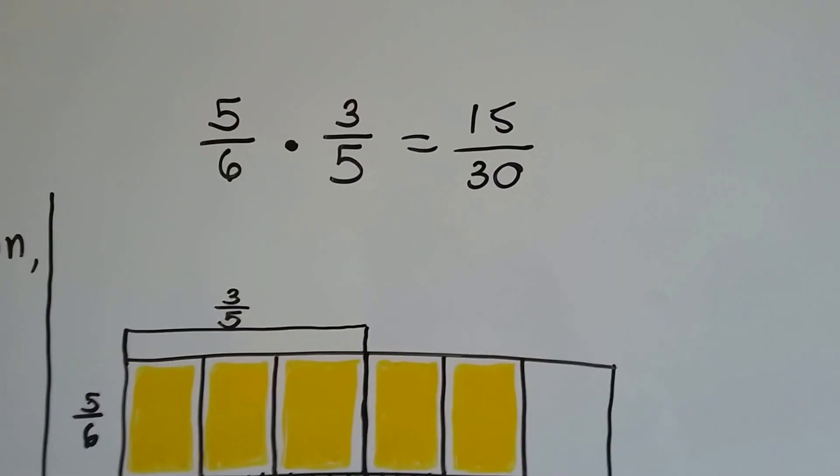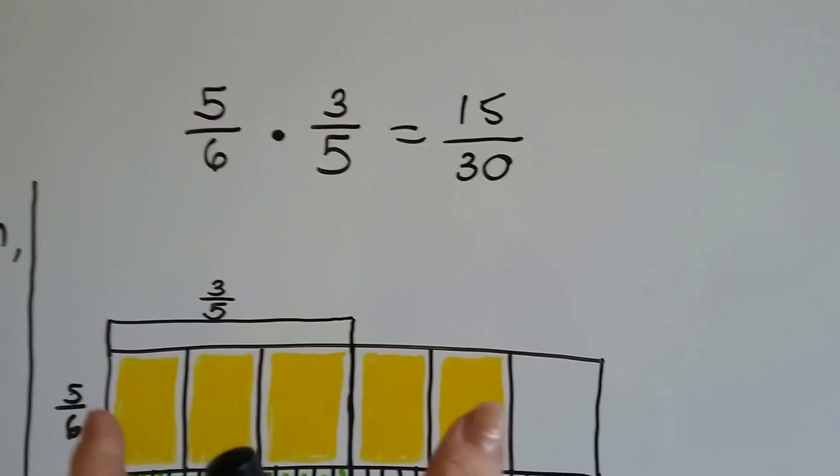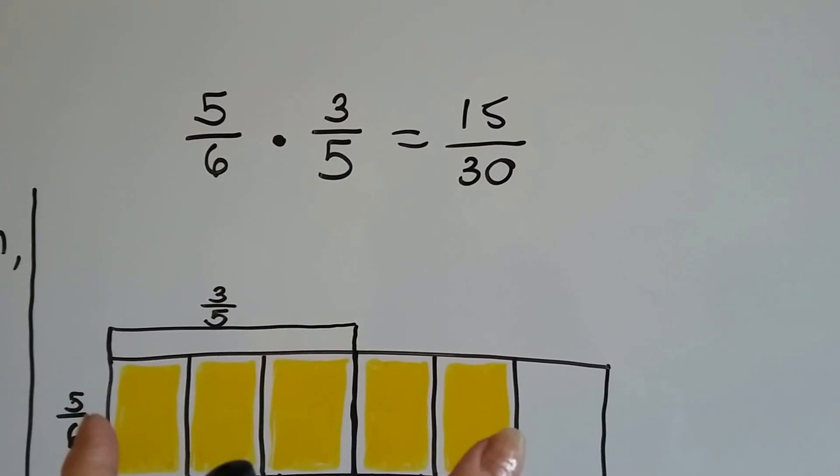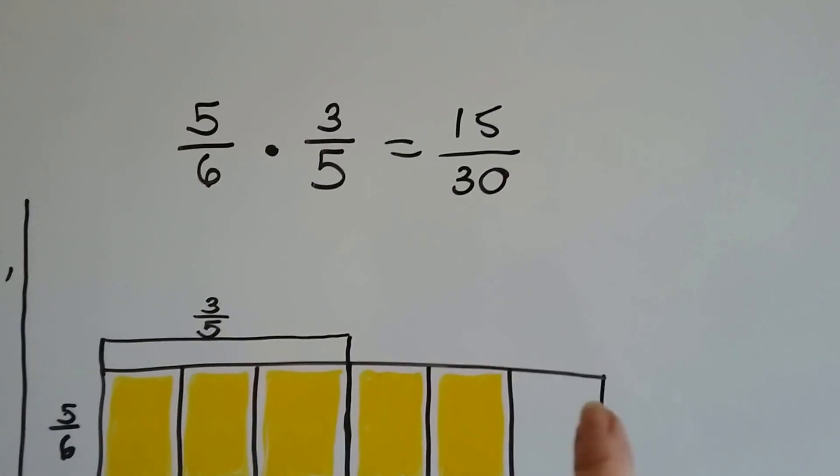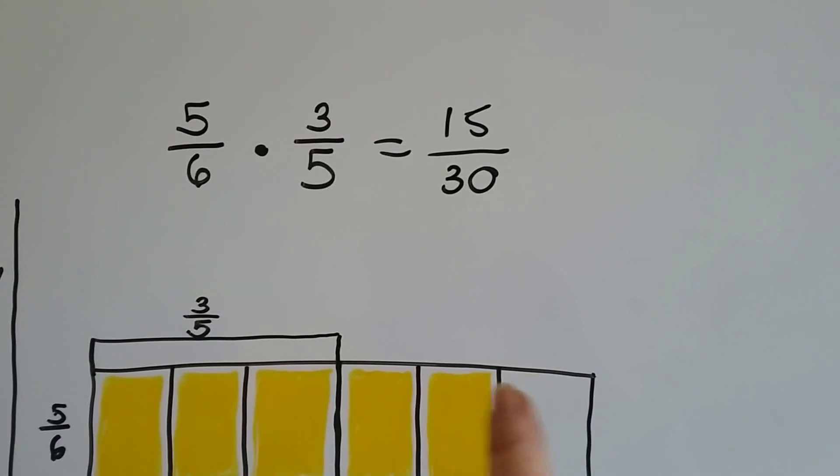5/6, we have a big bar here and five out of the six are colored yellow. This is 5/6 right here. Five sixths of them are yellow.